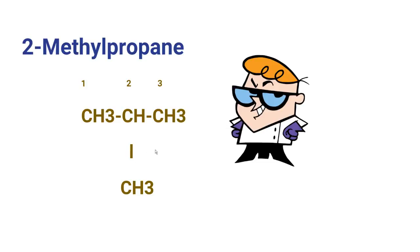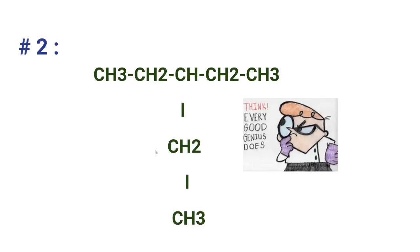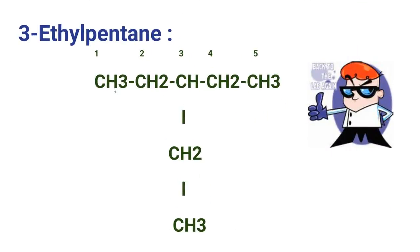Now let's see the second compound. It's an easy one — look at the longest chain and see where the substituent is present. Pause the video and write down the name. The name of this compound is 3-ethylpentane, because the longest chain consists of 5 carbons, making it a pentane, and an ethyl group is located on the third carbon.